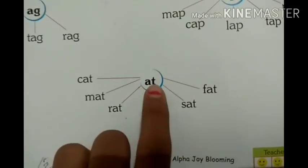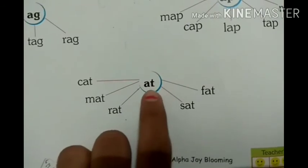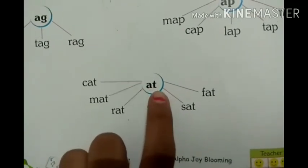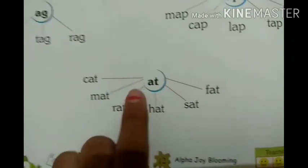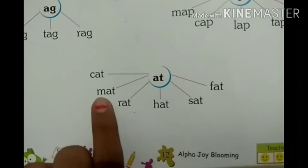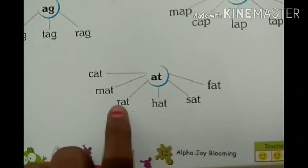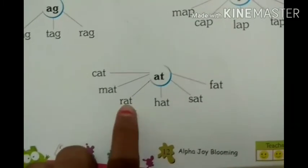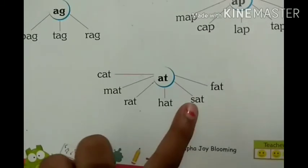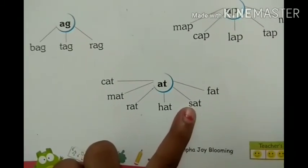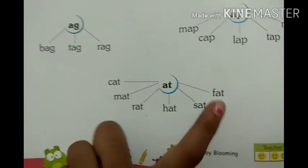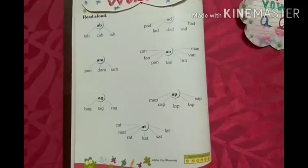A and T make AT. Repeat it with me: A, T — AT. What is the sound of C? K — CAT. What is the sound of M? M — MAD. What is the sound of R? R — RAD. What is the sound of H? H — HAD. What is the sound of S? S — SAD. P — PAT. So kids, revise the two-letter words. Thank you and bye-bye.